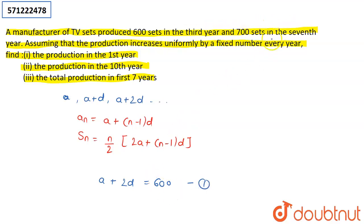And in the seventh year, I had 700 sets. So, it becomes A + (7-1)D, that is A + 6D = 700. Let us mark this as equation 2.